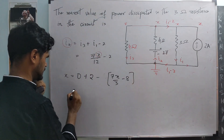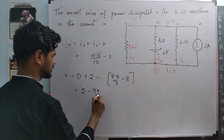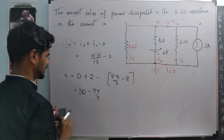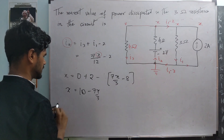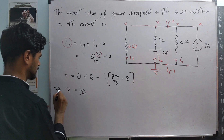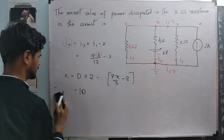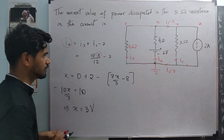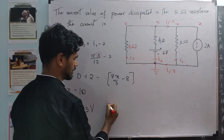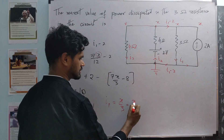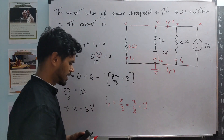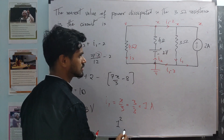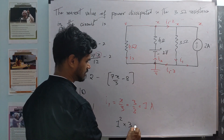Solving for x: rearranging gives 2 minus 7x by 3 plus 8, so 10 equals 7x by 3 plus x, which is 10x by 3. This implies x equals 3 volts. If x is 3 volts, then I1 equals x by its resistance, which is 3 by 3 equals 1 ampere. And because I1 is 1 ampere, the power dissipated is 1 squared times 3, which is 3 watts.